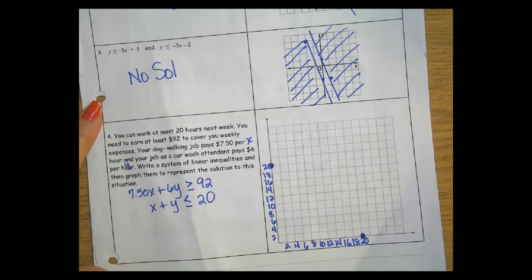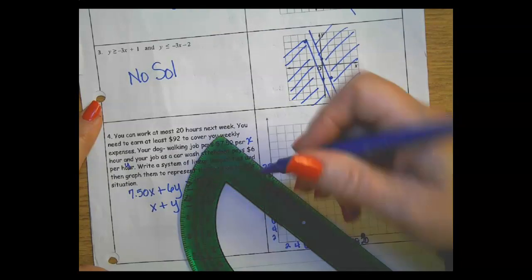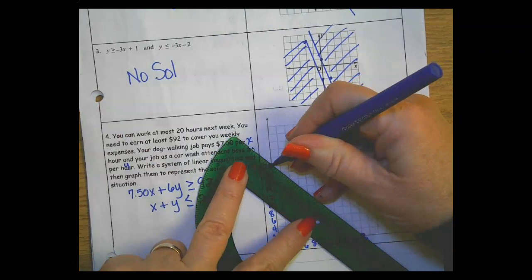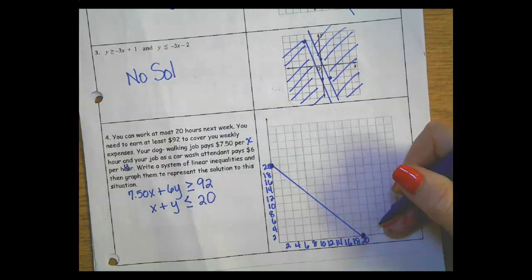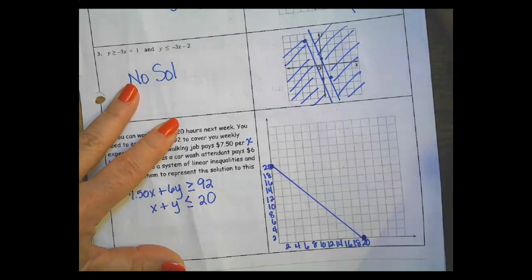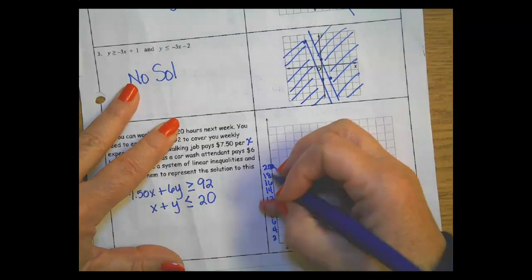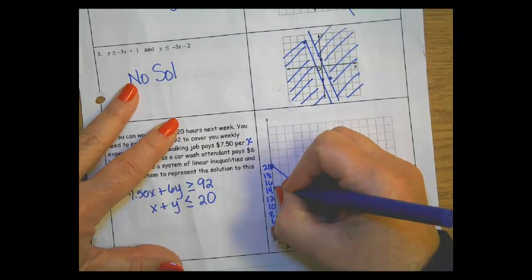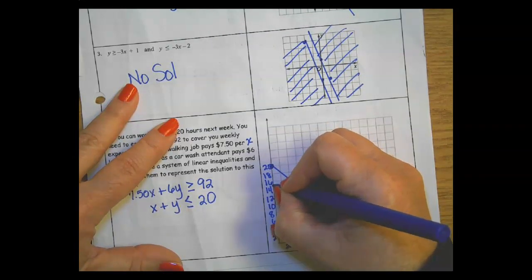And that line on the x crosses at 20. So this one goes 20 to 20, so I'm going to draw a solid line there.